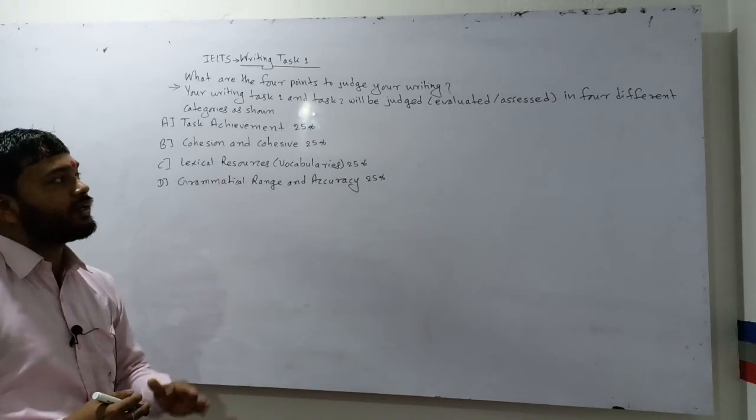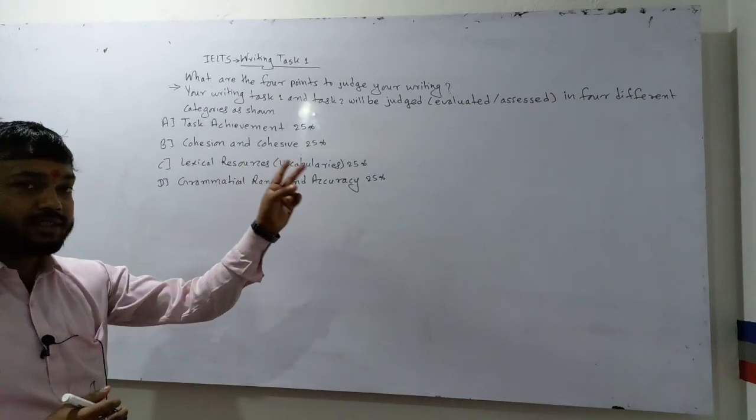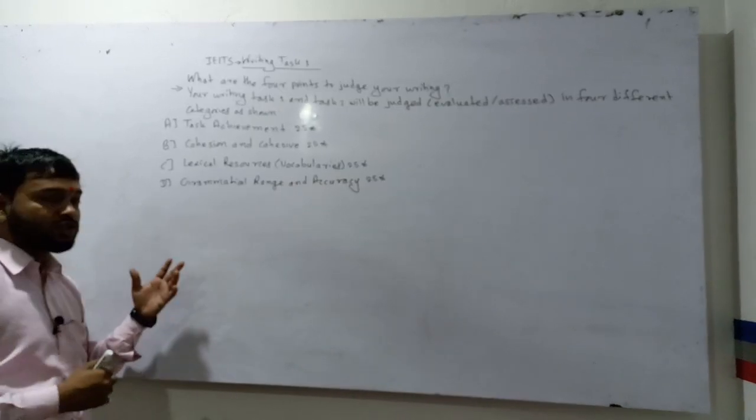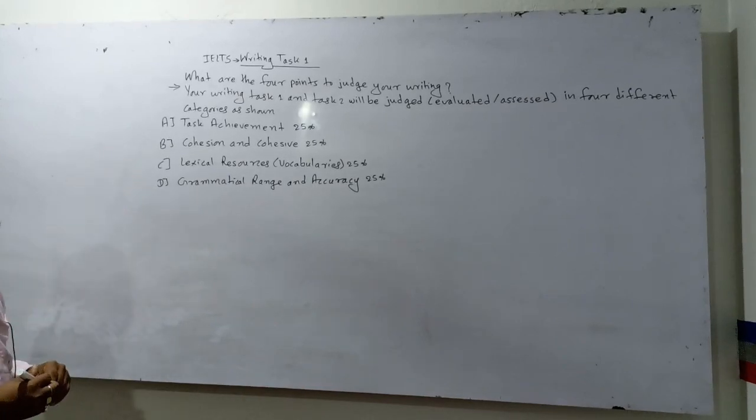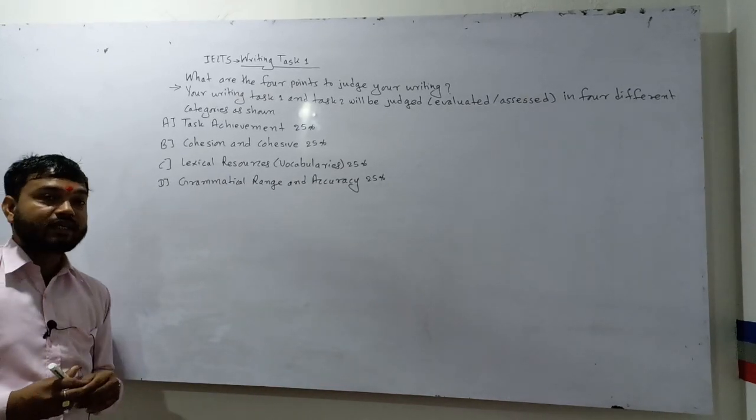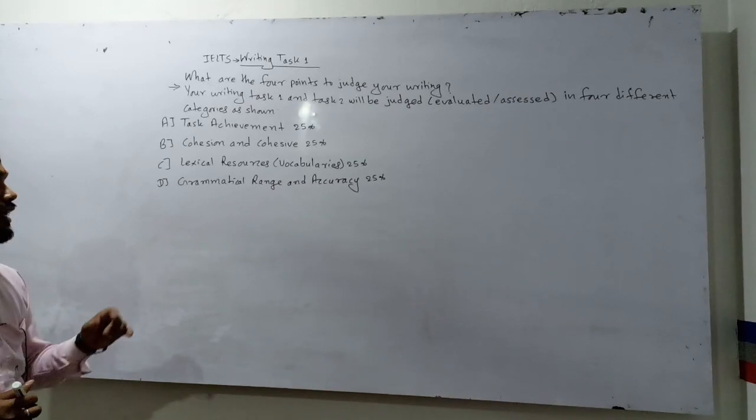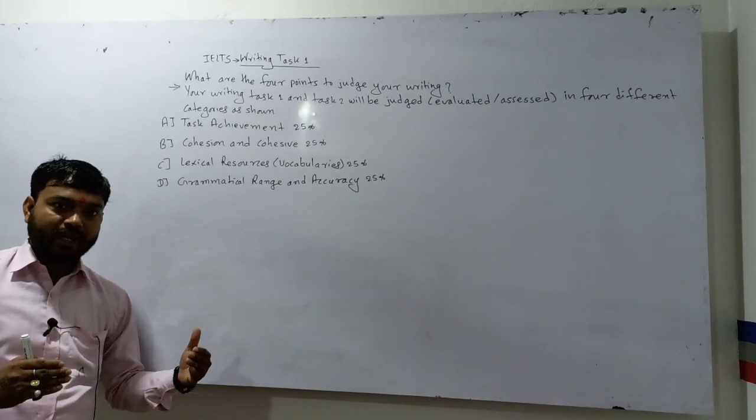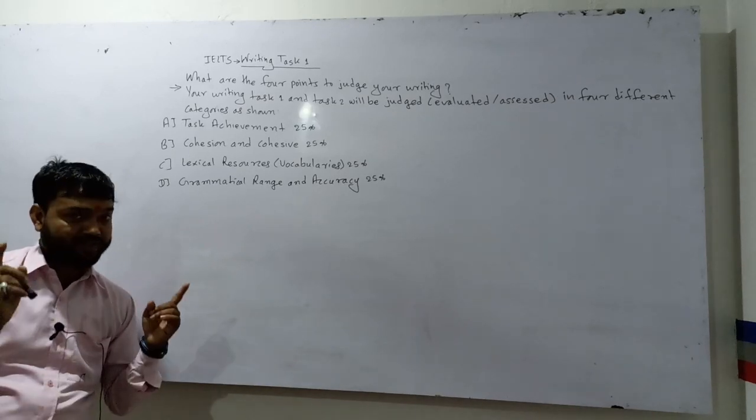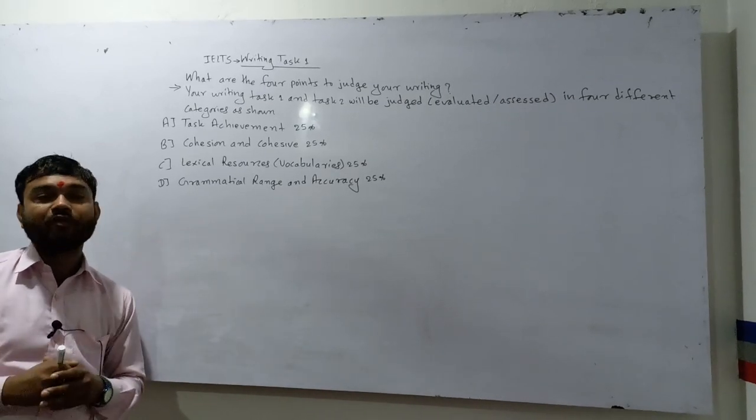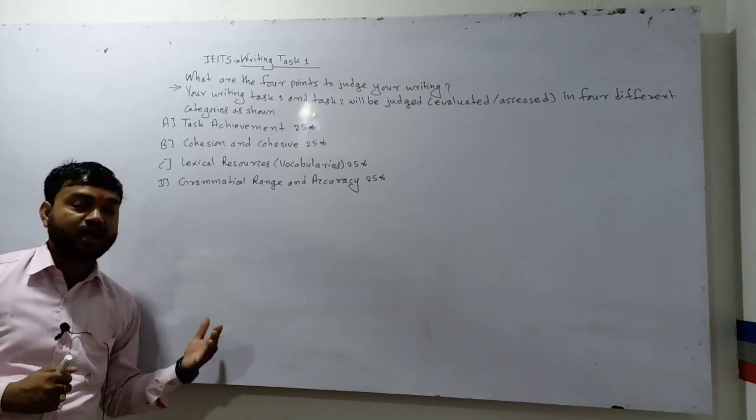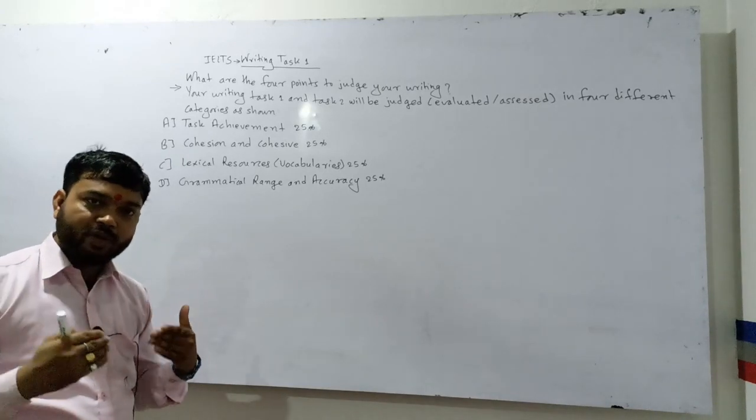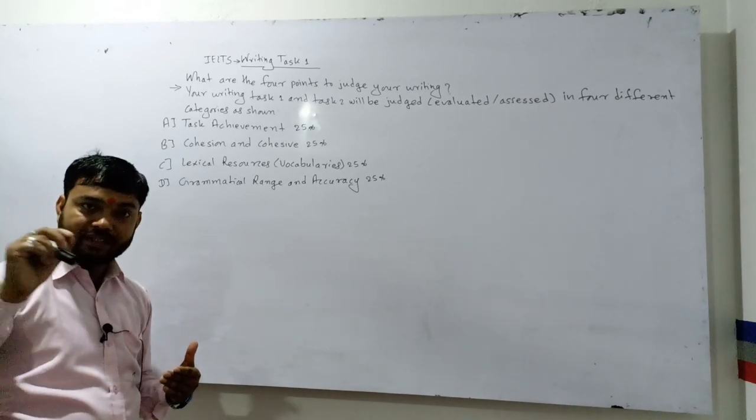The categories are evaluated or assessed - these are similar words. The first is Task Achievement, also called TA. This means how much you understand about the topic and how you introduce your writing. This matters from the first paragraph of your writing in Task 1 or Task 2.